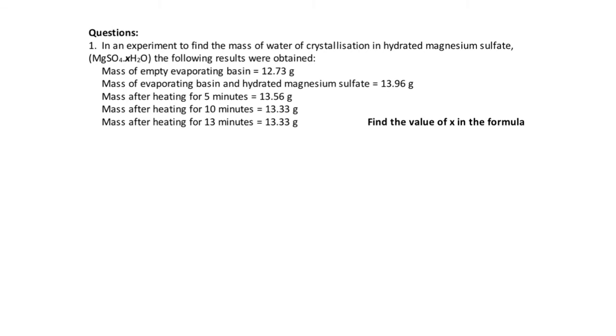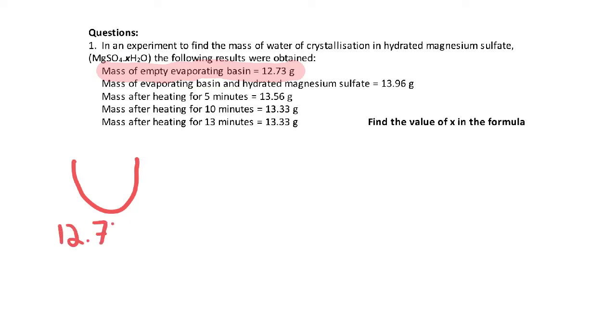So first of all, we have the mass of the evaporating basin. So an empty evaporating basin weighs 12.73 grams. So here's my empty evaporating basin, that's 12.73 grams. The next mass I have is the mass of my evaporating basin and my hydrated magnesium sulfate. So if I think about that visually, here is my evaporating basin, here is my magnesium sulfate which is in green, and I'm also going to add into that my water.